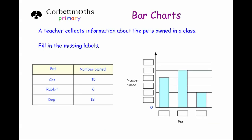And finally our last question. A teacher collects information about the pets owned in a class. The table shows that 15 cats were owned, 6 rabbits were owned and 12 dogs were owned. We've got this bar chart and the question says to fill in the missing labels — the missing pets and the missing numbers on the vertical axis.